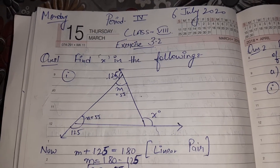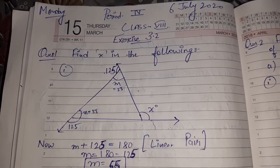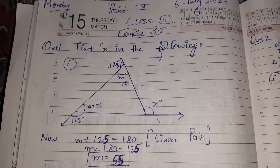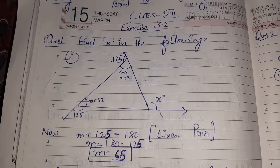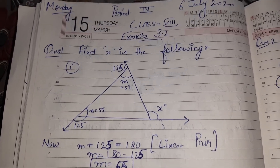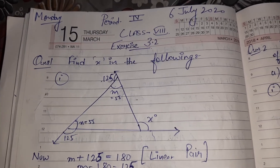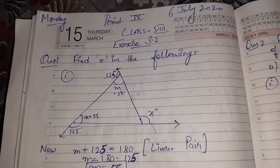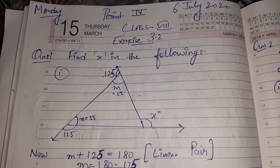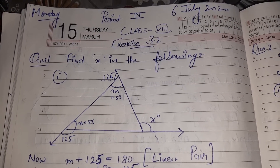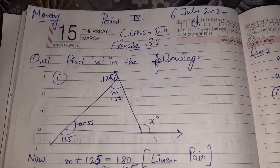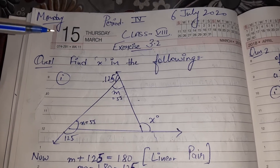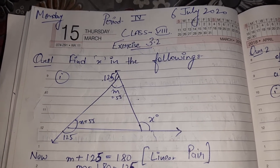Good morning everyone. Welcome back to school. Remember, school buildings are closed but schools are not closed, so please come back to your studies. We have 4th grade mathematics. The date is 6th July, the day is Monday. Let's start further with Exercise 3.2.